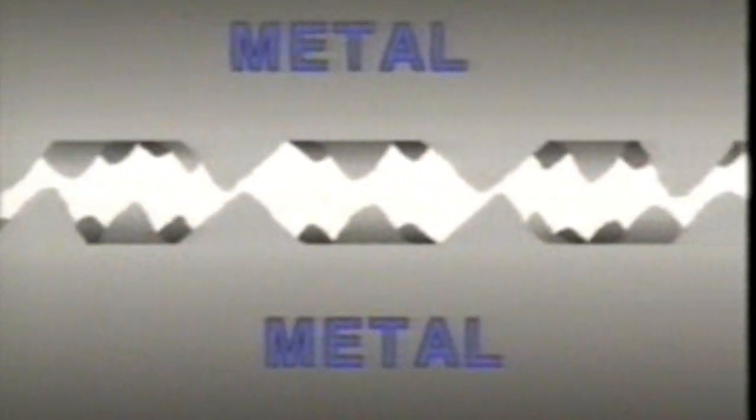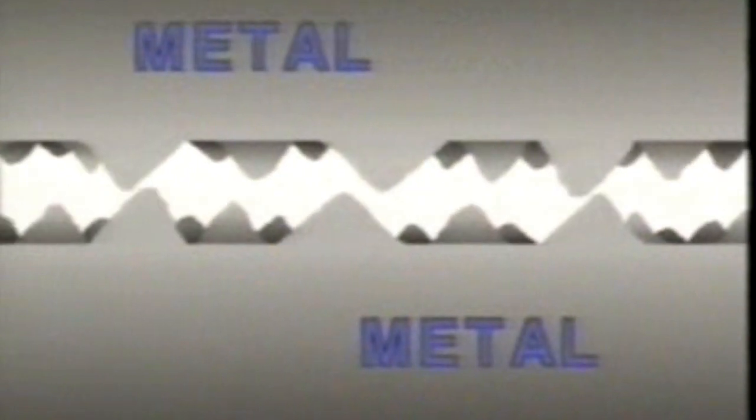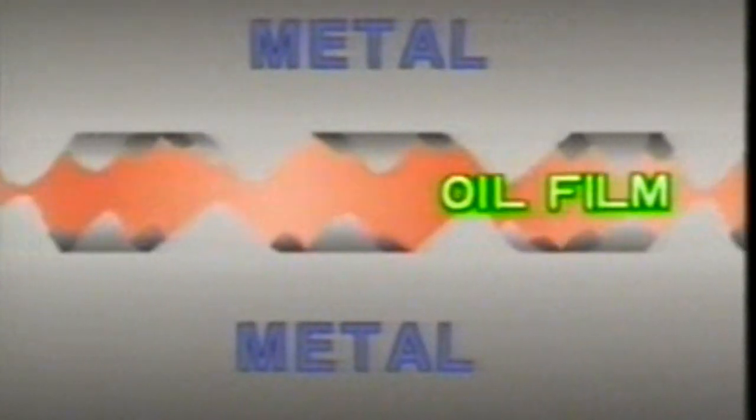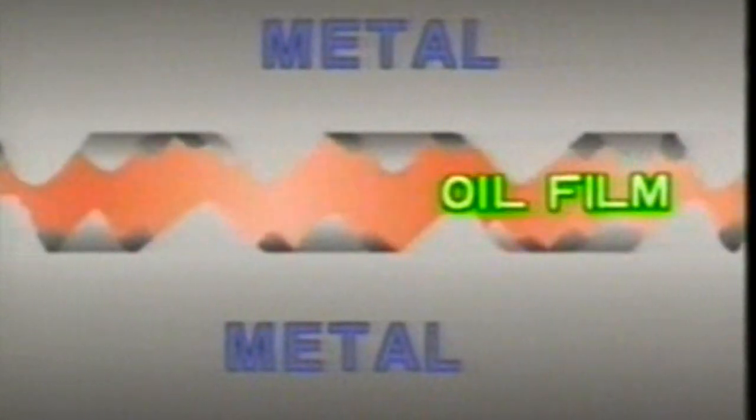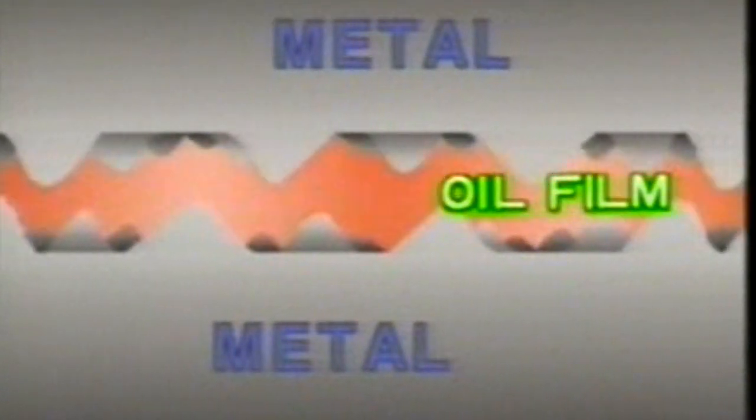When metal parts move against each other, friction causes heat as well as wear and seizure. But if there is a film of oil between them, friction is reduced, movement becomes smooth, and heat and wear are significantly reduced. This effect is referred to as lubrication, and the oil that protects two metal parts from each other is referred to as the oil film.